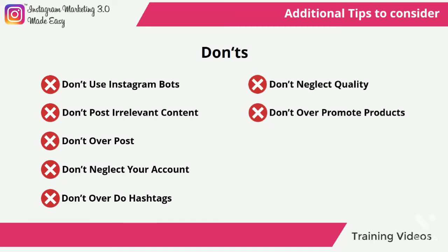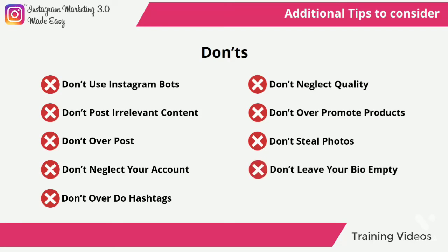Don't over-promote products — your followers already know that you are a brand, but nothing will turn them off more quickly than regular product-centered posts. Don't steal photos — don't use someone else's images unless you plan to mention them. Don't leave your bio empty — adding something besides your company name and address, such as a short bio, a relevant picture, and a relevant URL, is essential. Don't focus on numbers — don't base your Instagram success by the number of followers that you have, but by how they engage with you. That is the best way to measure how good your brand is doing.